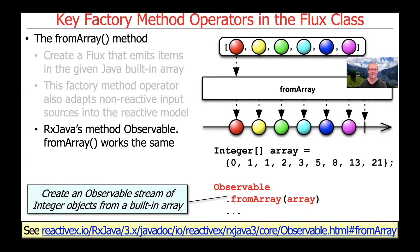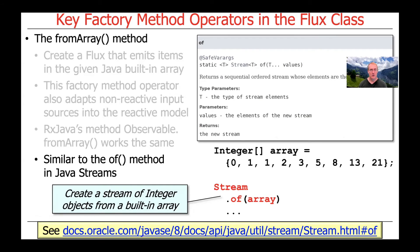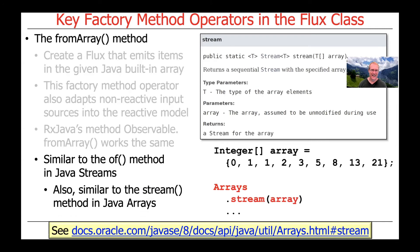Similar capability exists with RxJava's fromArray method, which works just like Project Reactor's fromArray method. It's also similar to the of method of Java Streams — you can use Stream.of to give it an array, just like you can give it other data types, and this will convert that built-in array into a stream. There's also the stream method on the Java Arrays class, which is yet another way of creating a stream. You can see there are all kinds of ways of getting very similar behaviors across different types of modern Java streaming-oriented frameworks.